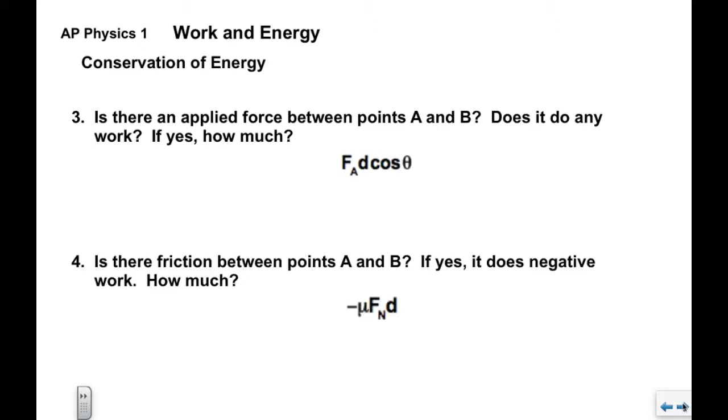We're then going to be looking for friction between points A and B. If it's on a surface and there's a mu then there'll be a friction force and that friction force will do negative work. So it'll remove energy from the system. And how much it removes of course is negative mu F_n d.